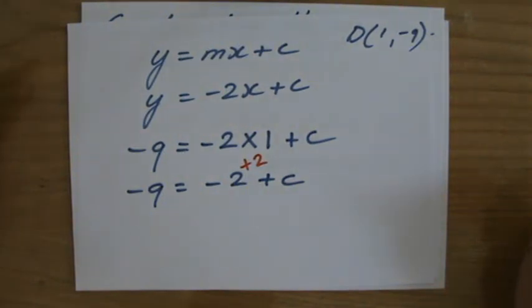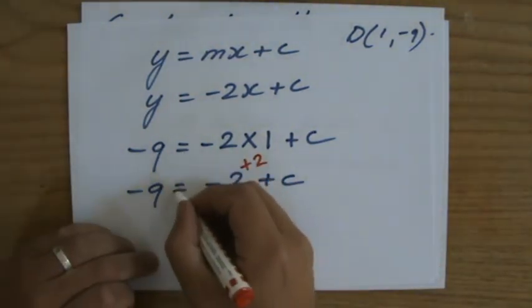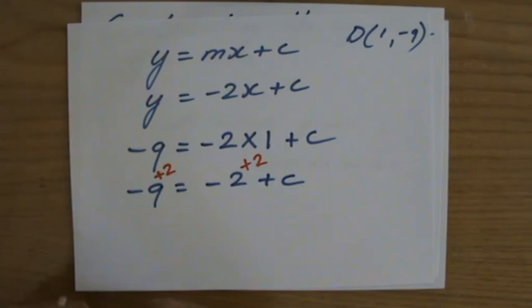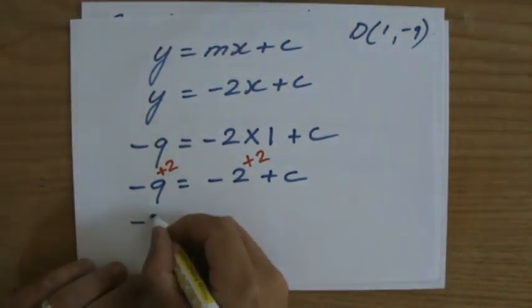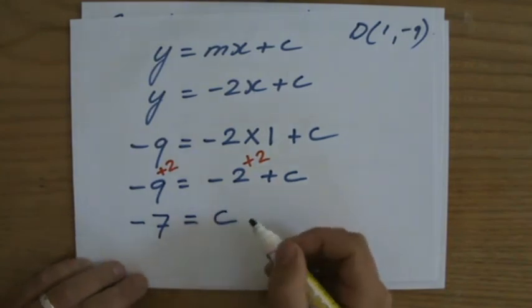How do I get rid of that -2? I've got to add 2. Then it's gone. It's zero. That's only equal if I add 2 here as well. -9 + 2, that is -7. And that is c. That's my y-intercept.